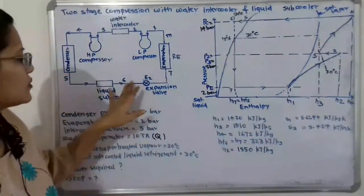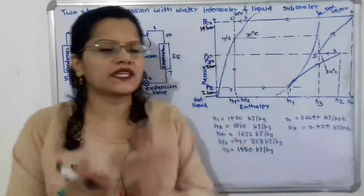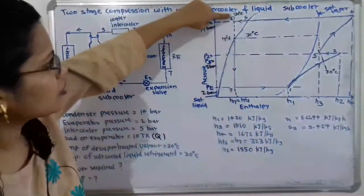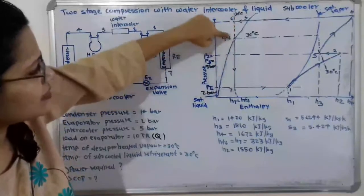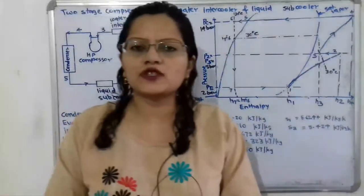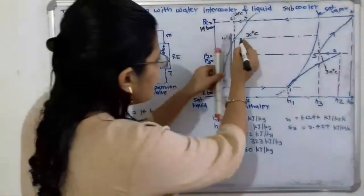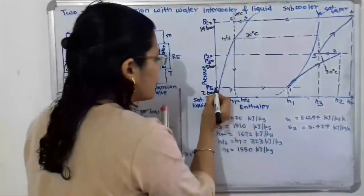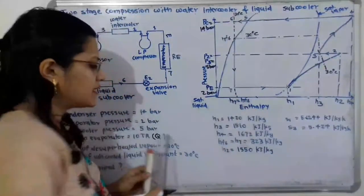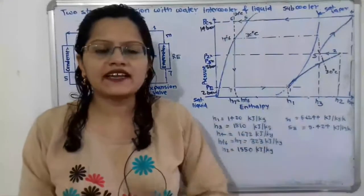The expansion process from point 6 to point 7 takes place at constant enthalpy — that is, at constant temperature of 30 degree Celsius — with pressure decreasing to the evaporator pressure of 2 bar. Extending this vertical line to the 2 bar pressure line gives us point 7, where H7 equals HF6 equals 323 kJ/kg. In this way, we obtain enthalpies at all the points.